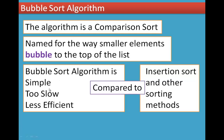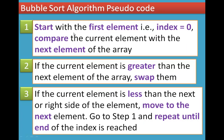Bubble sort algorithm is simpler but very slow and less efficient. Now, if you have a pseudocode for the bubble sort algorithm: first, start at index 0, that is the first element. Compare it with the next element. Now, if the current element is greater than the next element, swap.